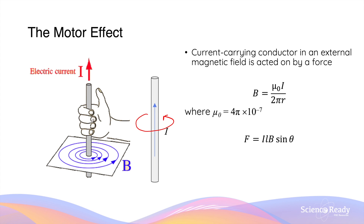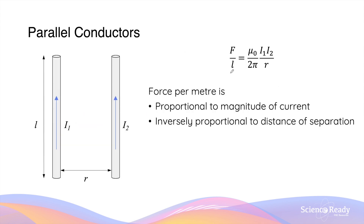The first conductor experiences a force due to the magnetic field produced by the second conductor, and at the same time, the second conductor experiences the same force due to the magnetic field of the first conductor. On the left-hand side of the equation we have the force per metre of the conductor. This is proportional to the magnitude of the currents — more current through either or both conductors means a stronger force. The force per metre is also inversely proportional to the distance of separation.